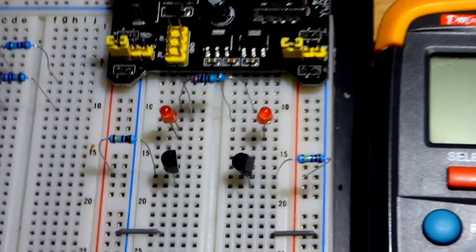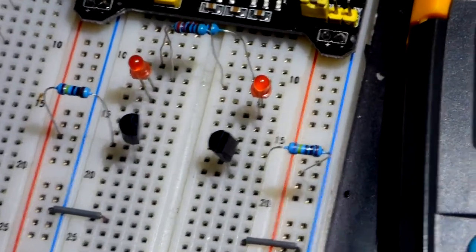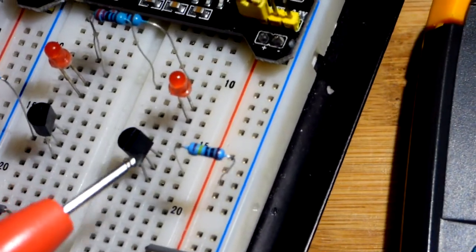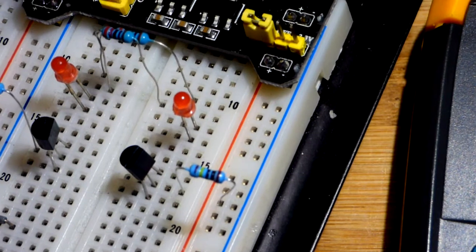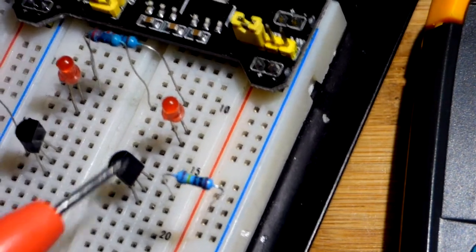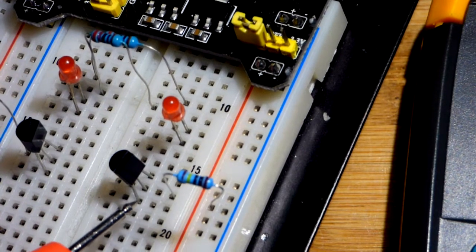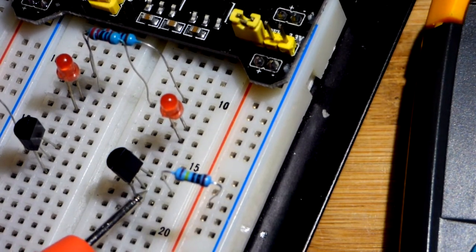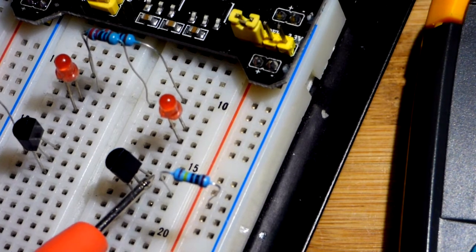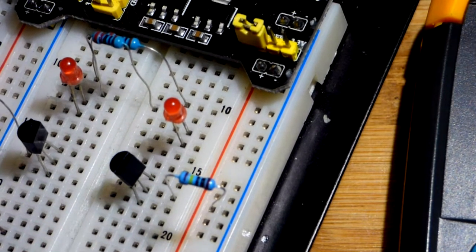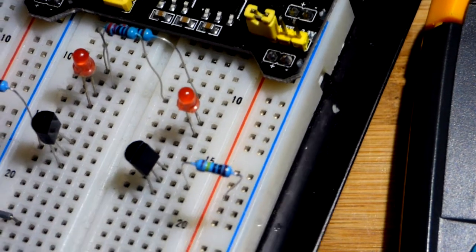So to begin with, we have the common NPN bipolar junction transistor right here. And if you don't already know the pin layout, flat side is basically facing us for both of them. They have the same pin layout. Left pin or bottom pin there is the emitter. The middle pin is the base, and the right pin or the top pin, flat side facing you, is the collector.